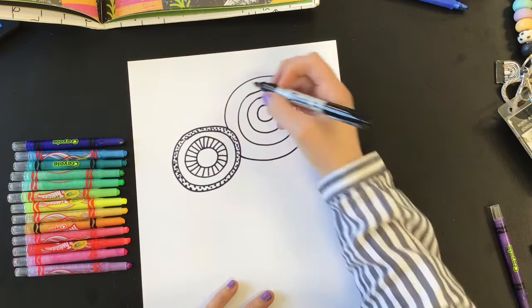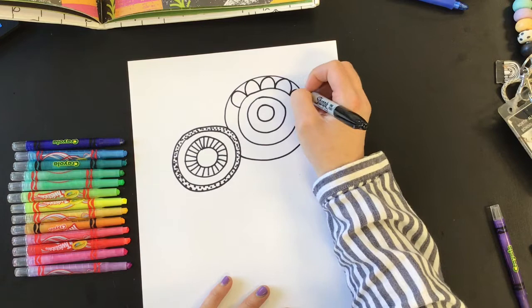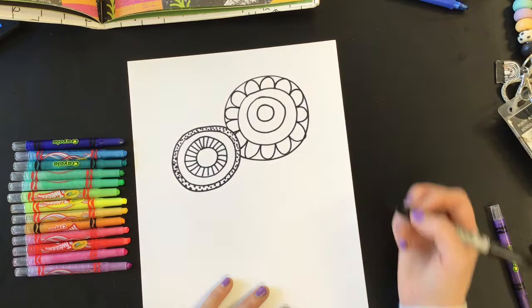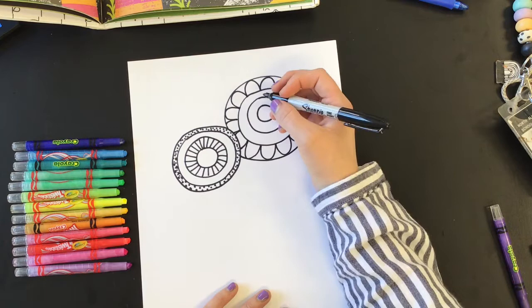For this one, I think I'm going to start with some bumpy lines. And if I hit that flower, I'm just gonna pretend like it goes behind it. Let's go ahead and speed up this process.